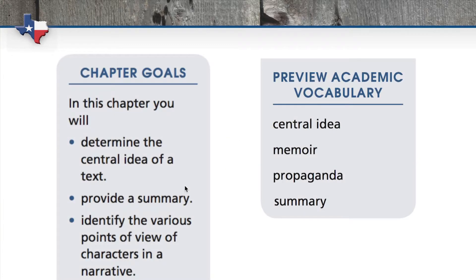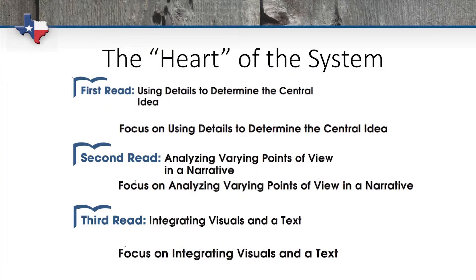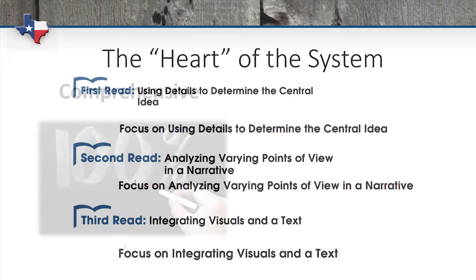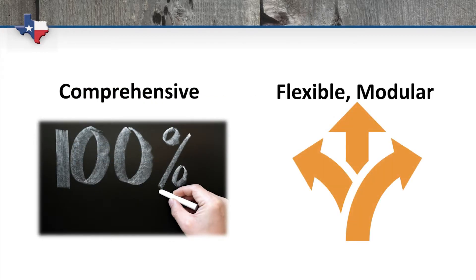We also give students goals for the chapter and touch on the academic vocabulary that they will encounter. Once the students are intellectually and emotionally invested, we launch into the heart of the chapter: the close reads, focus on skill exercises, and the speaking and listening discussions. Note that while these close reads and focus on lessons work best in order, they are in most cases modular and can be done in any order that you see fit as the teacher.